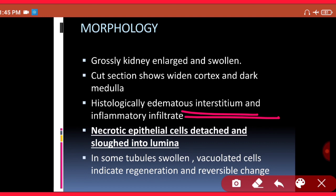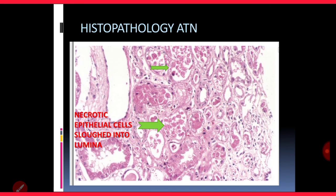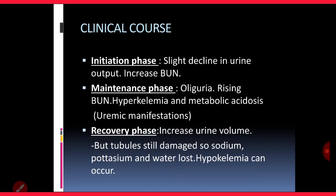If ischemia is of low degree, you will have reversible cell injury with vacuolar degeneration of the lining epithelium — vacuolated epithelial cells can be seen. However, the ultimate finding remains necrotic epithelial cells sloughed into the lumen of tubules.